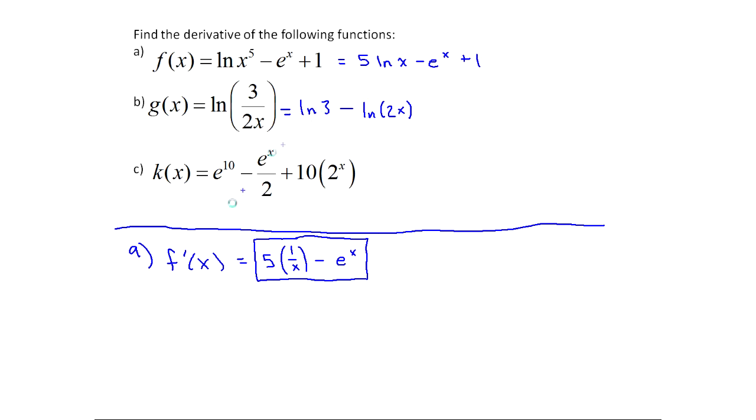What's ln three? What's the derivative of ln three? Well, ln three is a constant. Put in your calculator, you get a number. So actually the derivative of this is zero. Then what's ln of 2x? I only have a rule for ln x. I'm in trouble again.